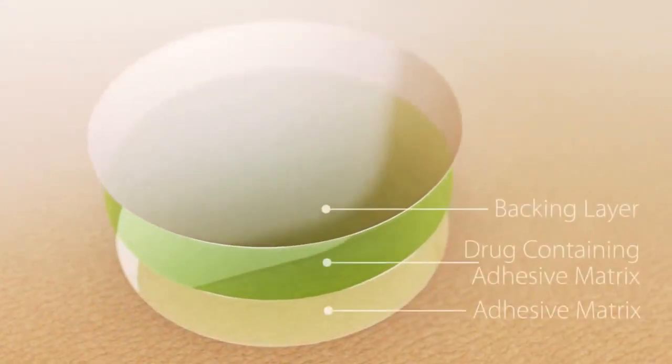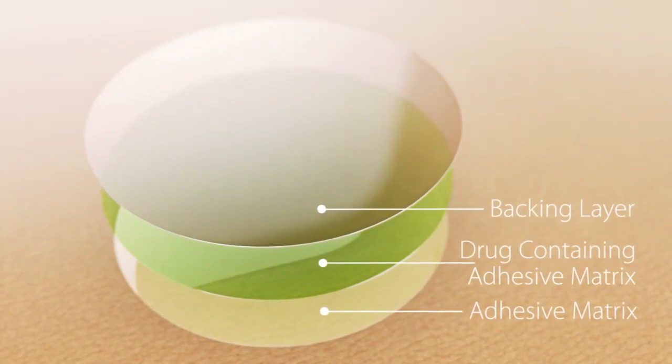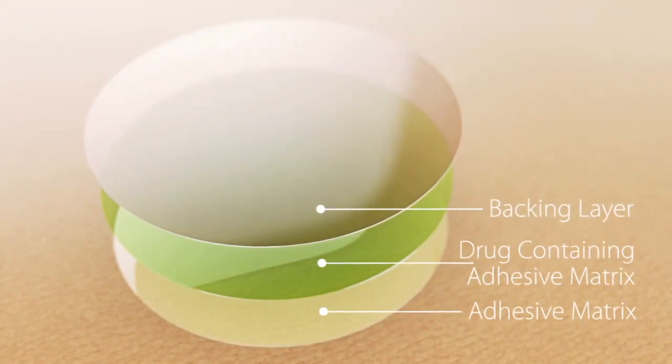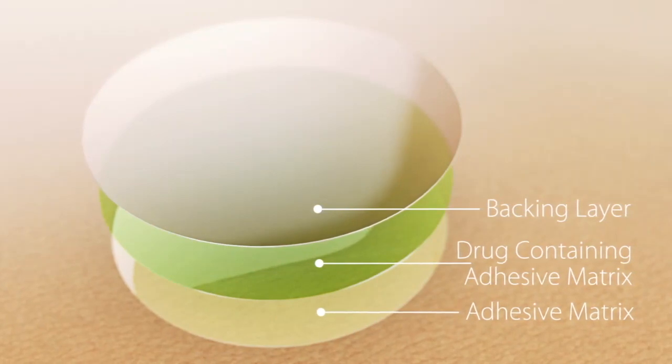The basic components of the transdermal patch are an outer backing film of plastic or foil and a pressure sensitive adhesive that anchors the patch to the skin.